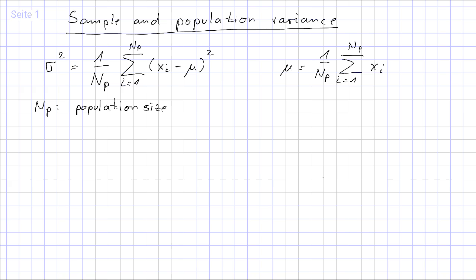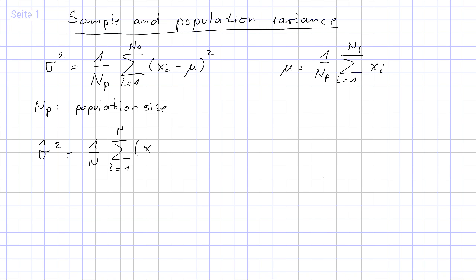Accordingly, if we don't have access to the population but only have some sample data, we would estimate the population variance sigma hat squared as 1 over n times the sum from 1 to n of the squared deviation of each data point from mu hat, where mu hat is the mean value of the sample.